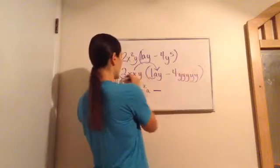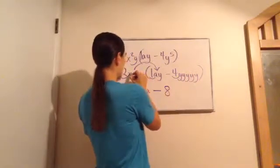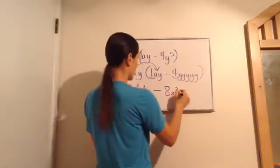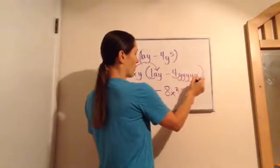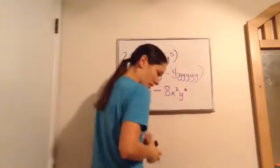Now, minus. And let's do this one. 2 times 4 is 8. And then, x times x. And there's no x over here. So, that just becomes x squared. And then, y. And then, there are times y, y, y, y, y. And there's five of them. So, 5 sixth. So, y to the sixth. Alright?